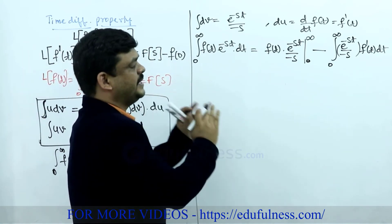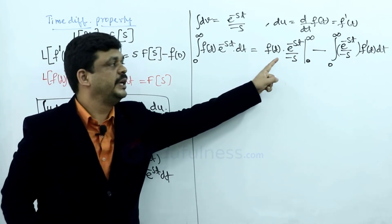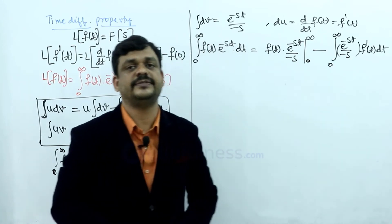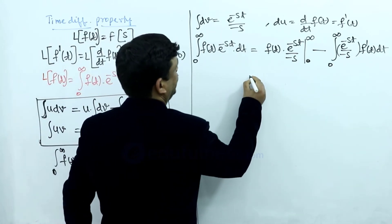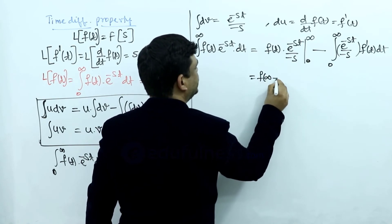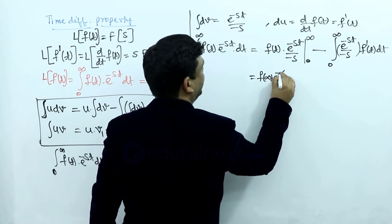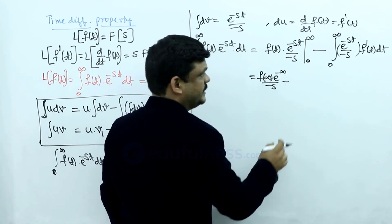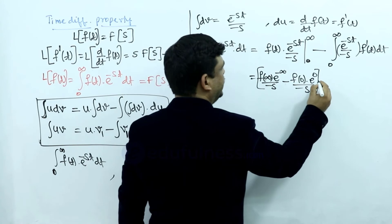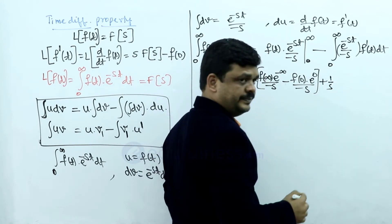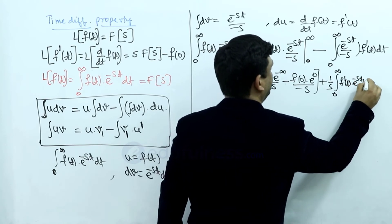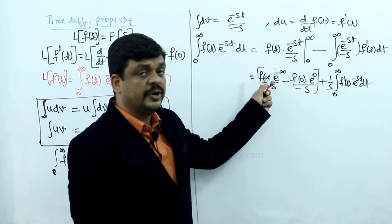Substituting the limits: at the upper limit, e^(−∞) becomes 0, so f(∞) into e^(−∞)/(−s) = 0. At the lower limit, substituting t = 0 gives f(0) into e^0/(−s) = f(0)/(−s). Taking minus s outside gives 1/s, and the remaining part is integration from 0 to infinity of f'(t) into e^(−st) dt. Since e^(−∞) = 0, the upper limit term becomes 0. Minus into minus becomes plus, and e^0 = 1, so we get f(0)/s plus 1/s times the integral of f'(t)·e^(−st) dt.